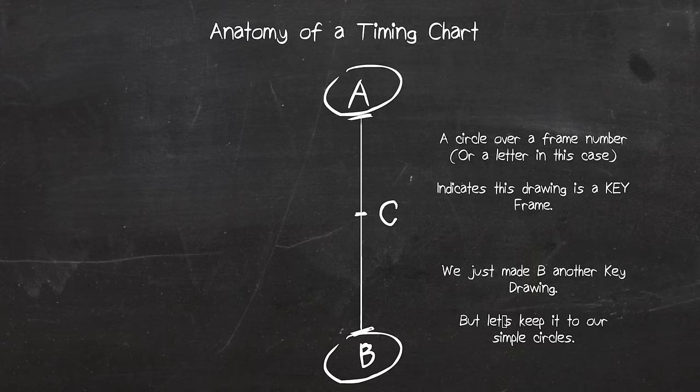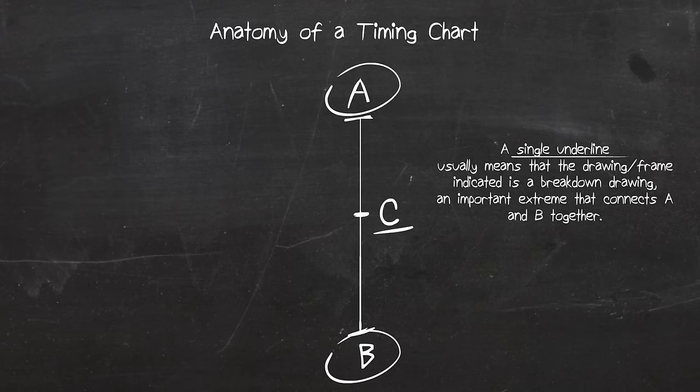Some animators double underline their frame to make them keys, but we're just going to use circles since circles are easier to read. A single underline means you are turning a drawing or frame into a breakdown. To me, a breakdown is another extreme that connects the key drawings together. It's technically not an in-between, but depending on the context, it can act as one.